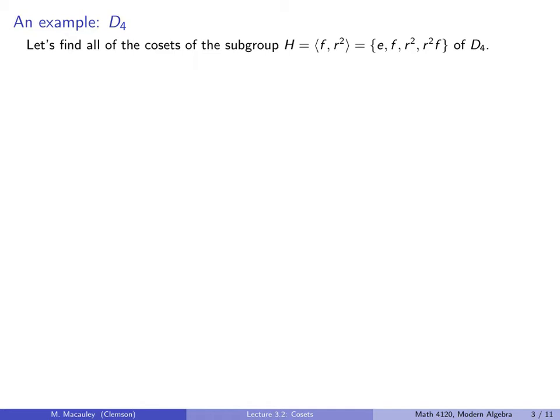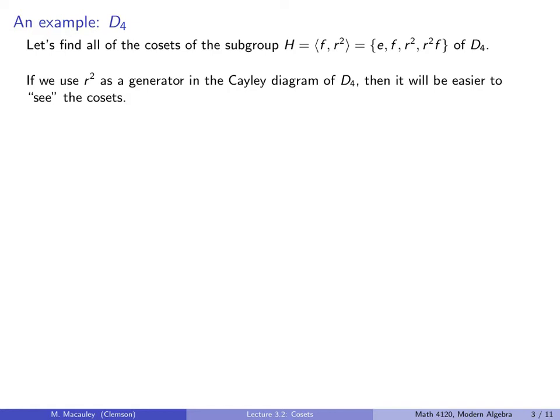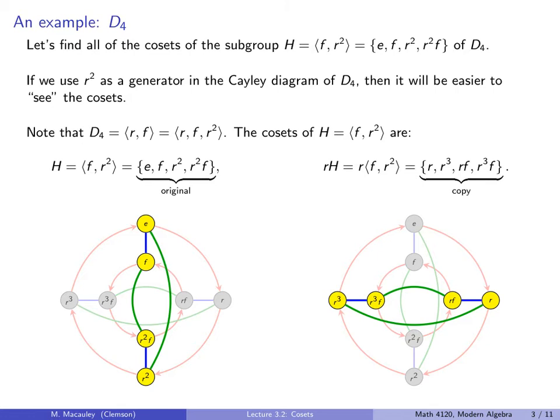Let's do another example. Let's find all of the cosets of the following subgroup of D4. This is the subgroup generated by F and R², namely these four elements. If we use R² as a generator in the Cayley diagram of D4 — and we don't need it but let's throw it in as well — it will be easier to visually see the cosets.